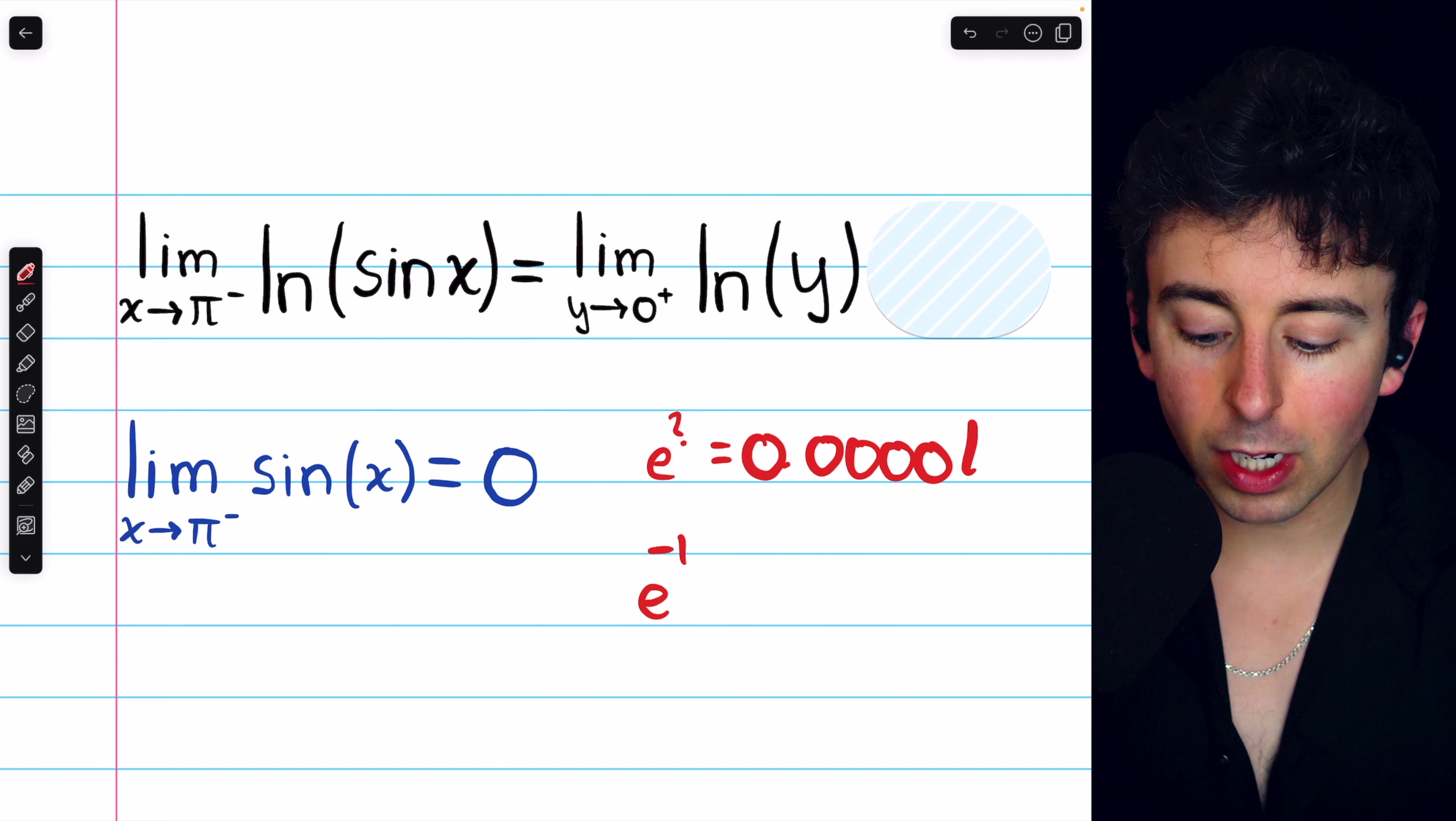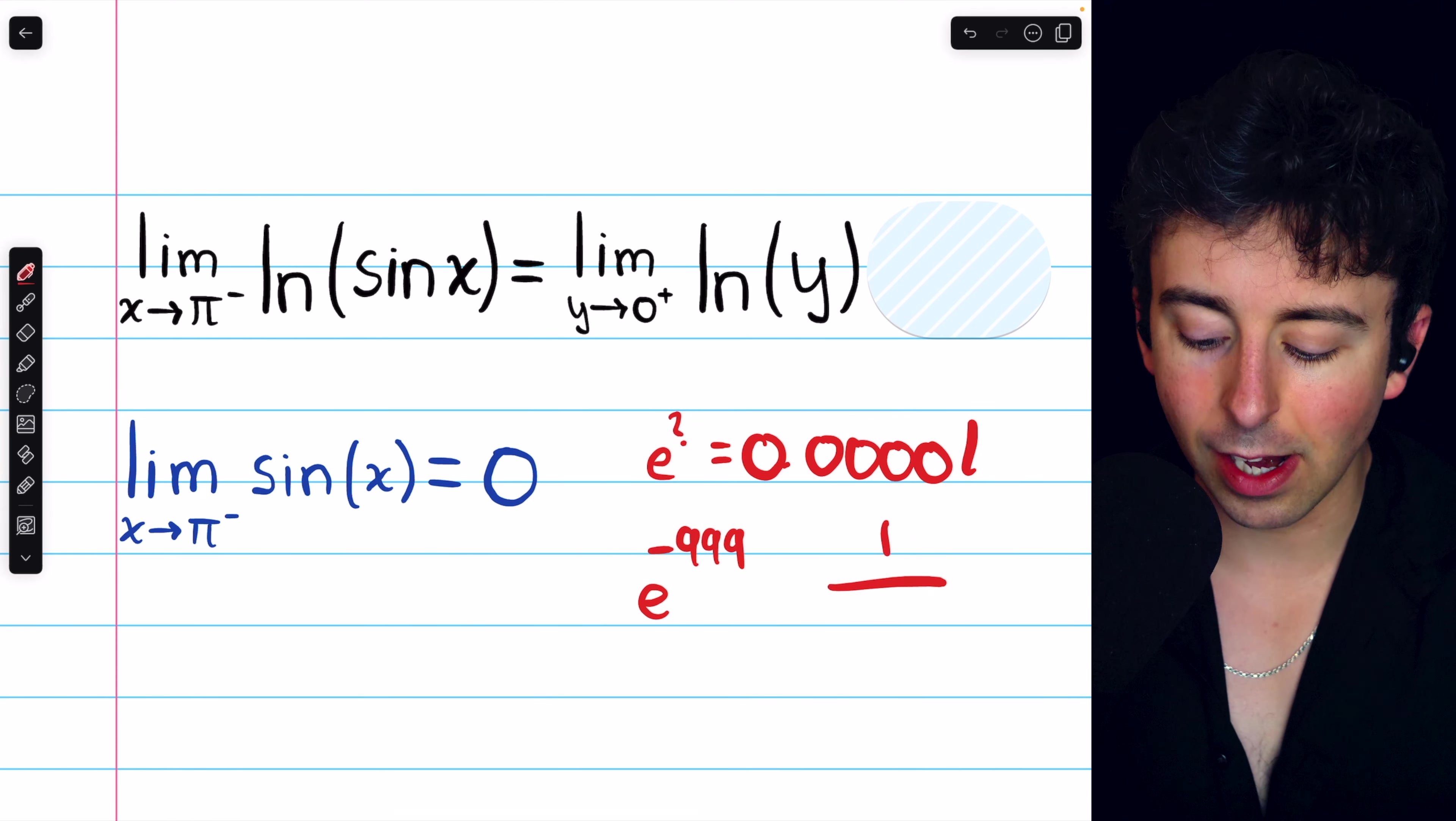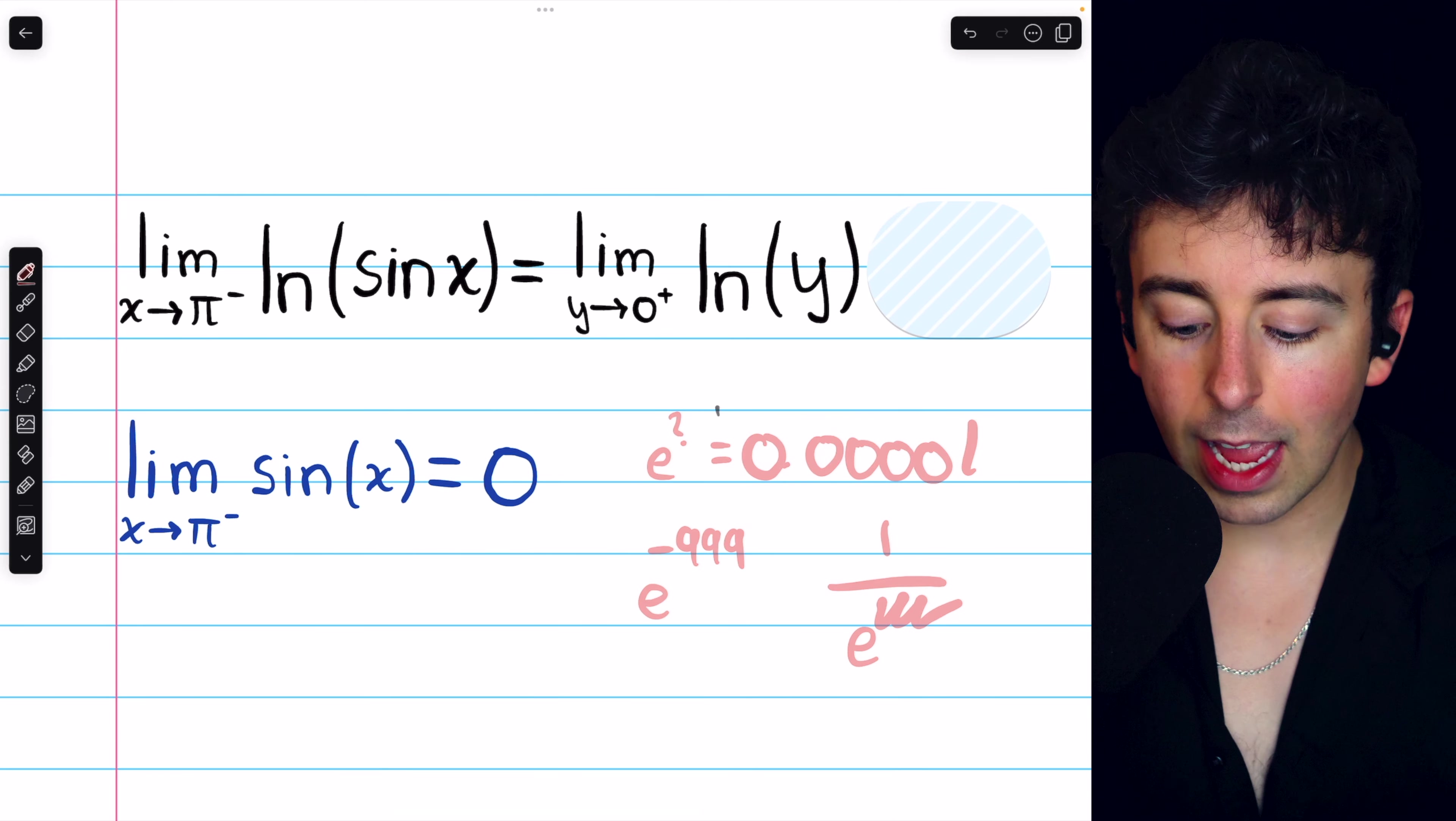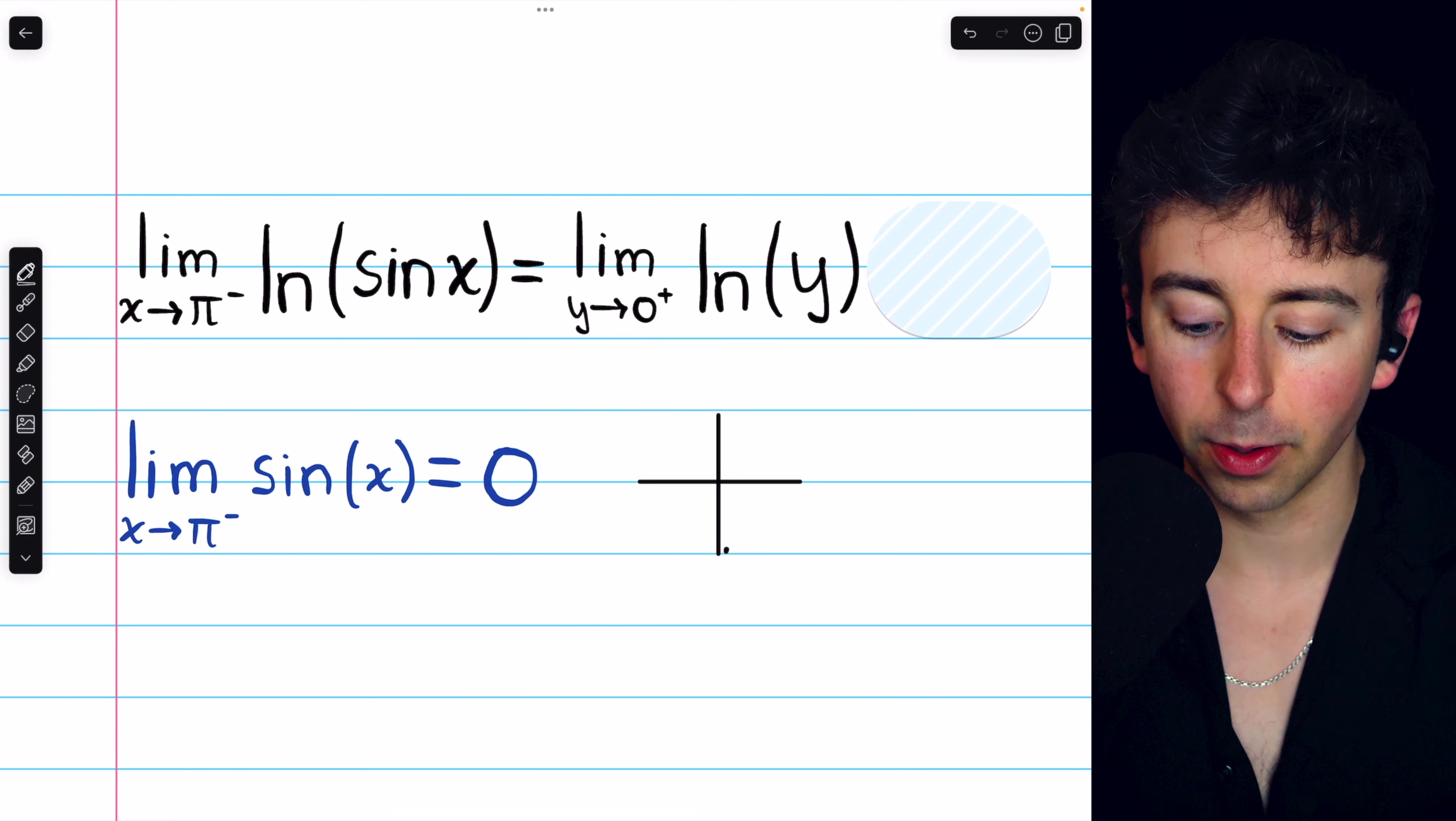So if y is some super tiny positive number, well, we would need to raise e to some really big negative number so that we would have 1 divided by e to some massive power. That would produce a really tiny positive number.